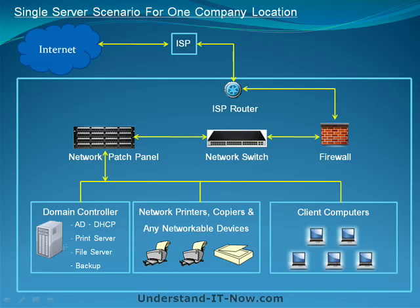The most common hardware setup for small business is the single server single location. You have your internet service provider — like AT&T, Comcast, or Verizon — and they provide you with an ISP router that's physically located at your company. You also purchase your own firewall, network switch, and patch panel.